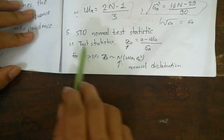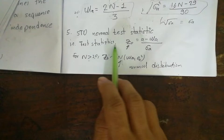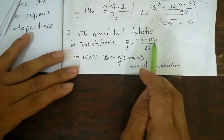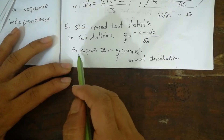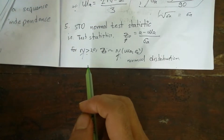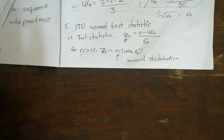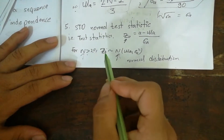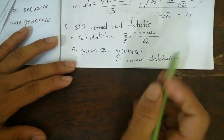Step 5 is to calculate the standard normal test statistic. The test statistic z₀ is given by: z₀ = (a − μ_a) / √(σ²_a). Here, n is the total number of values in the sequence. If n is greater than 20, we can say that this test statistic follows a normal distribution.